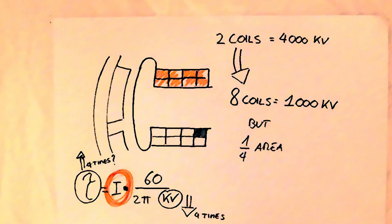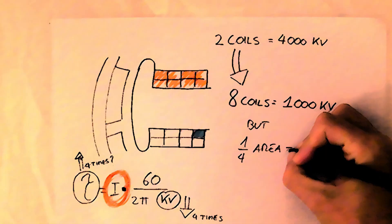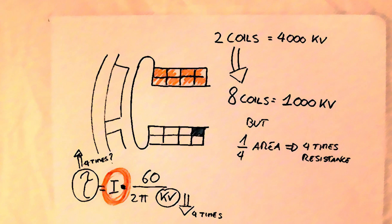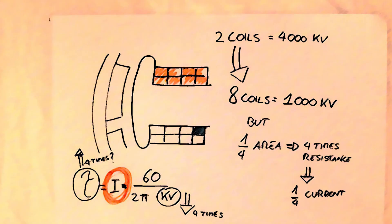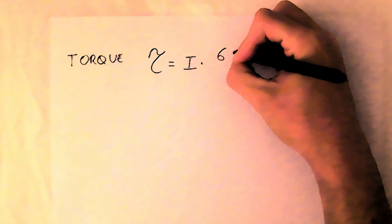So to fit eight coils instead of two we have reduced the cross sectional area by four times. Increased the resistance by four times and reduced the current by four times. Do you see where it's going?